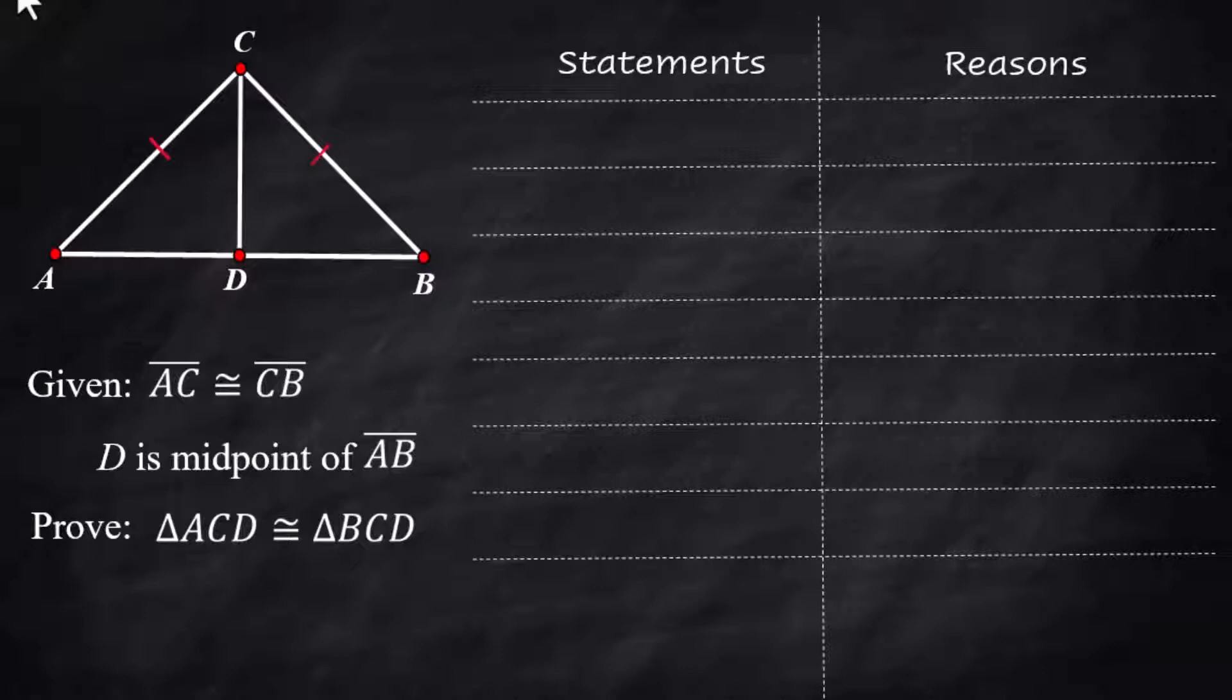Step one mark up the diagram. AC is congruent to CB and because D is a midpoint of AB we know that AD is congruent to BD. Because they share the side down the middle we know that CD is congruent to itself.